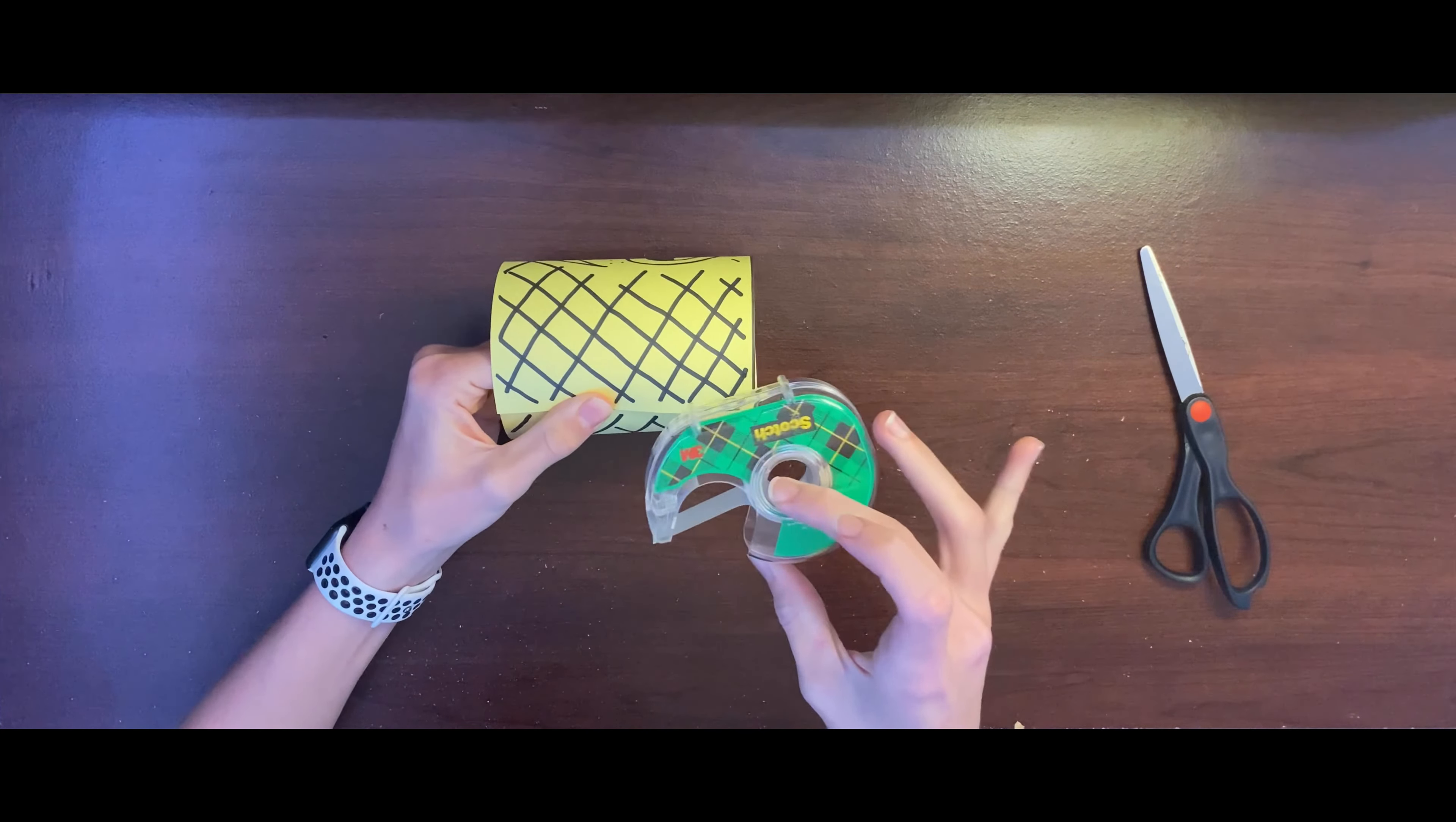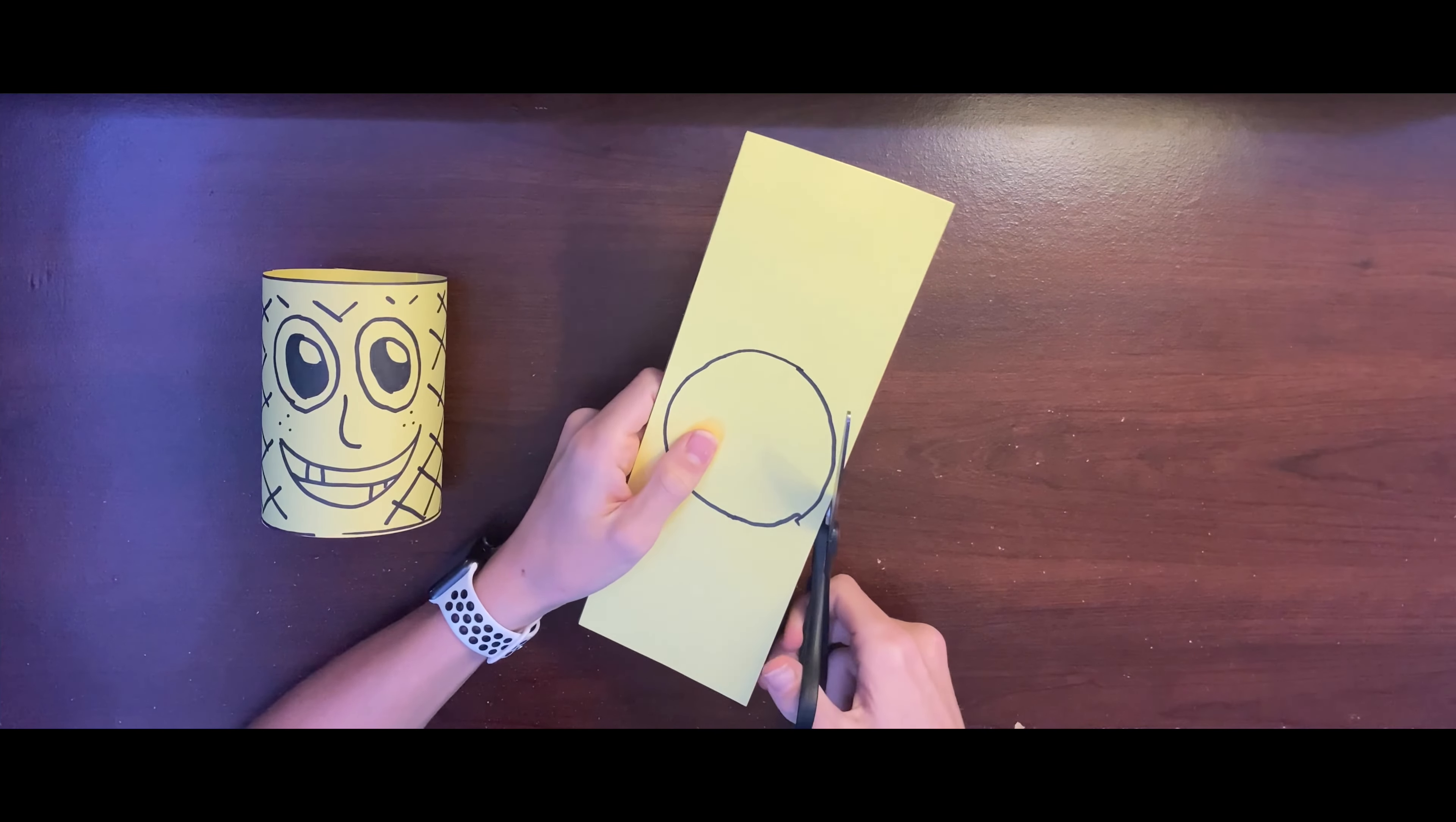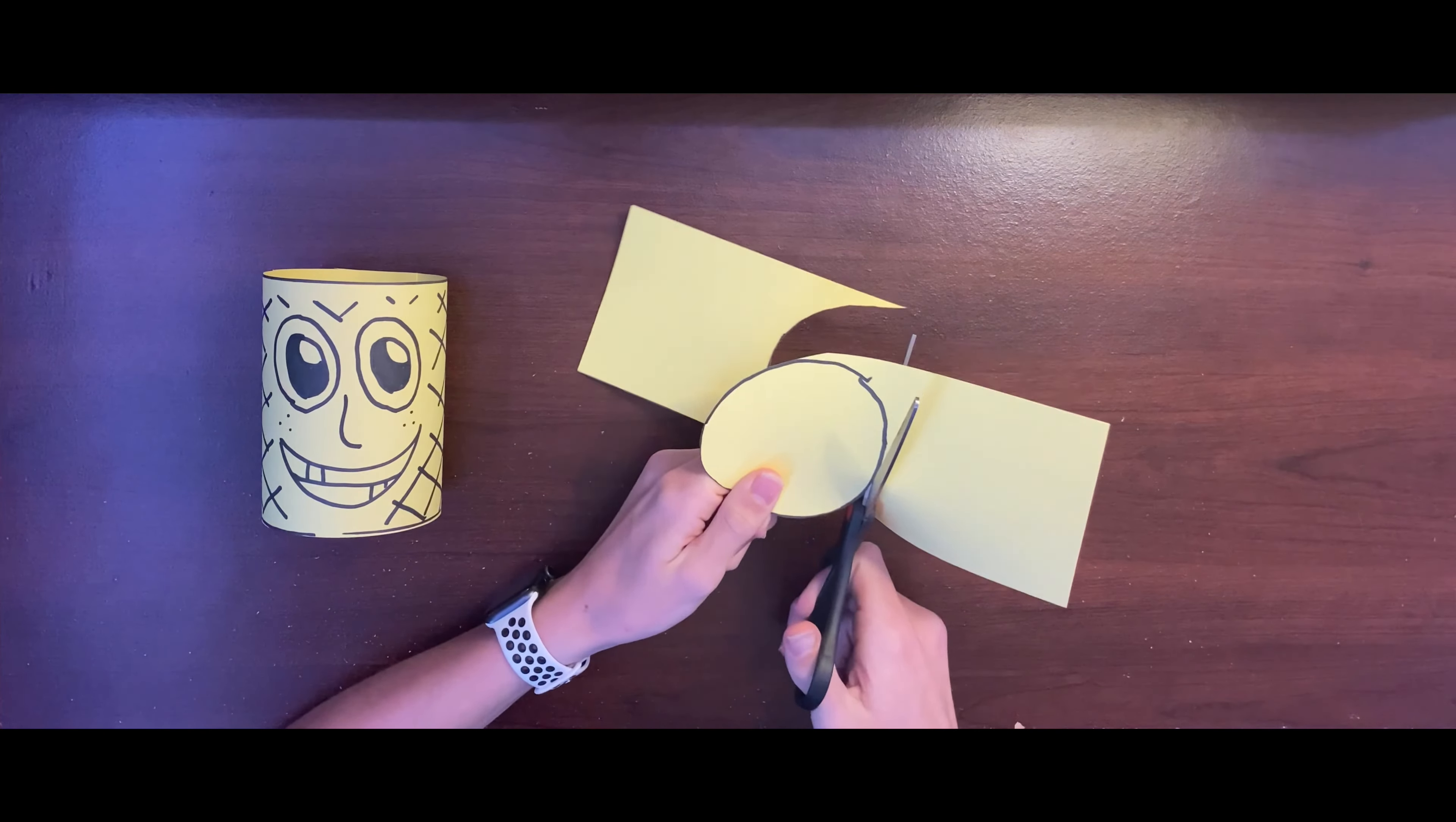Now get the remaining sheet of yellow paper and use your cylinder as a guideline when drawing a base circle. This will go on the bottom of the pineapple cup. Let's cut it out.